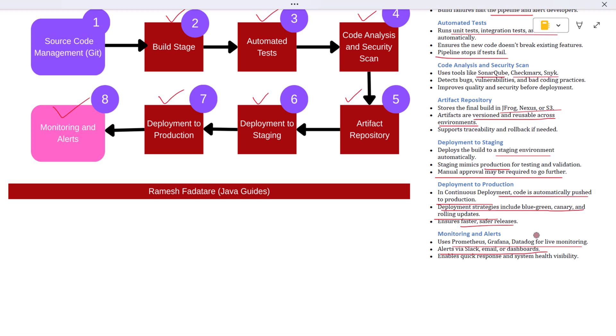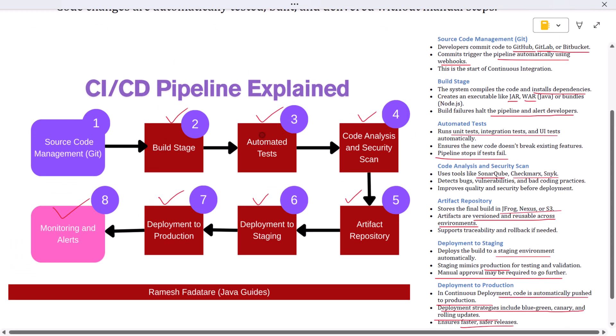So to recap, a CI/CD pipeline helps automate the software delivery process from writing code to releasing it live. It begins with a git commit, then moves through build, testing, security scans, artifact creation, staging, and possibly automatic production deployment, all backed by real-time monitoring. CI/CD gives teams the confidence to deliver high-quality code quickly and reliably. Thanks for watching, and I will see you in the next one.